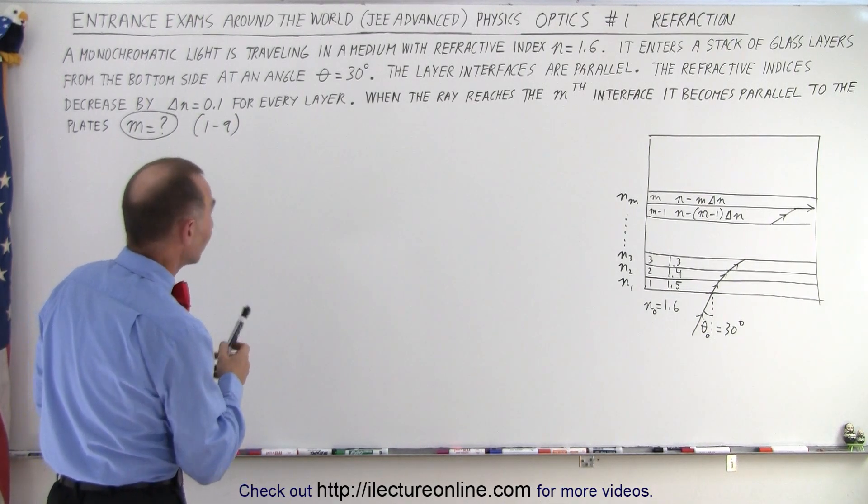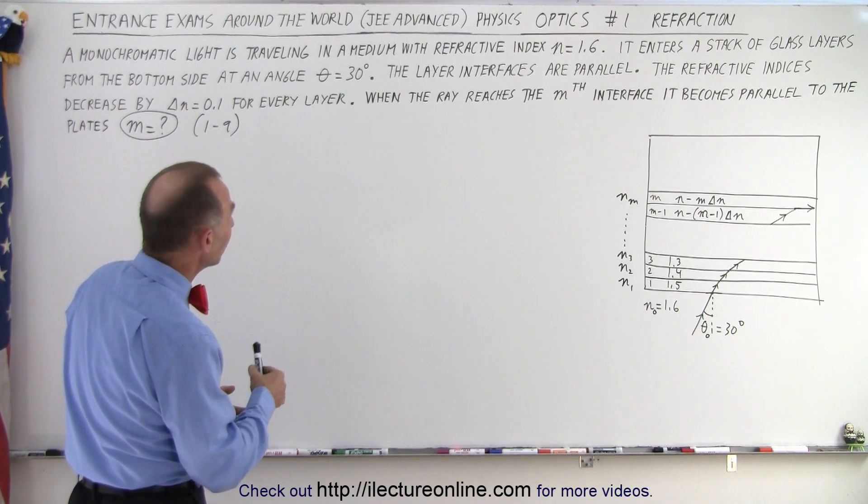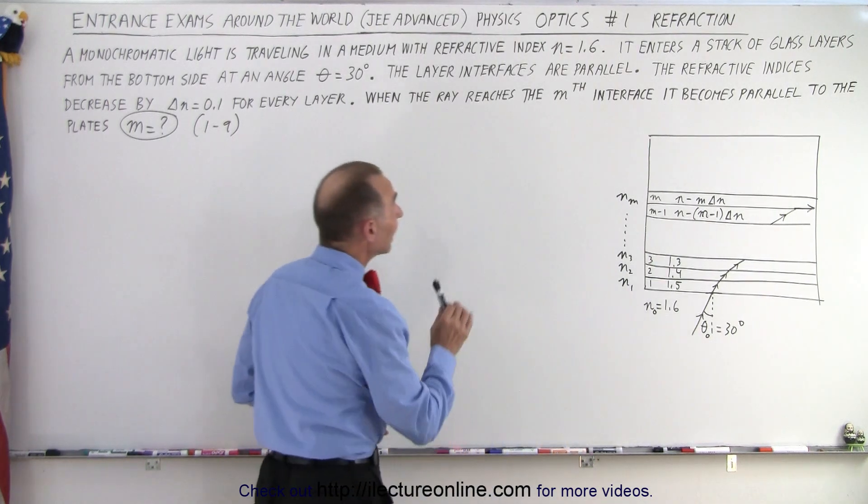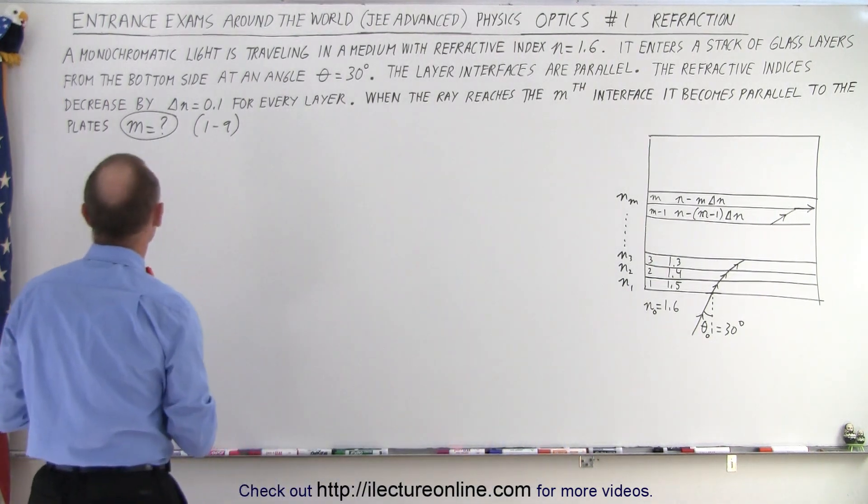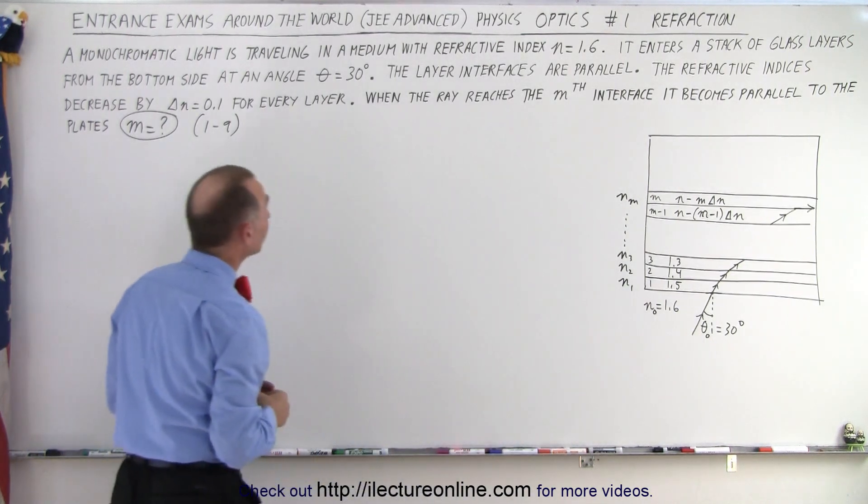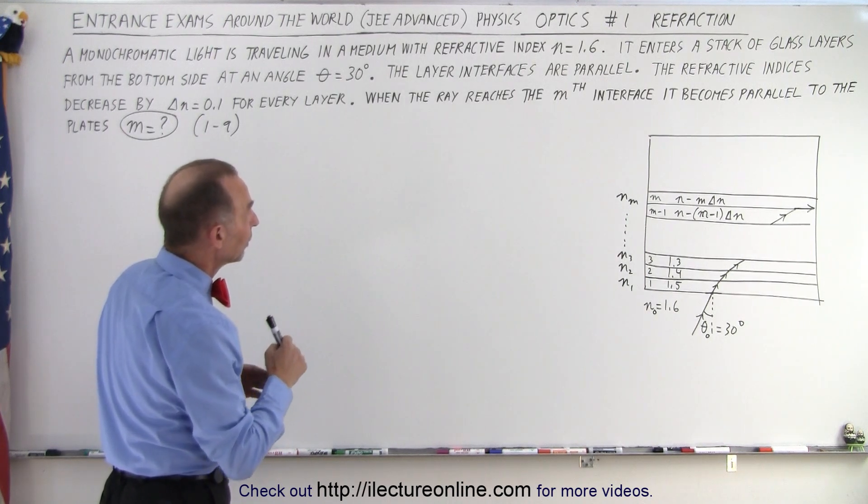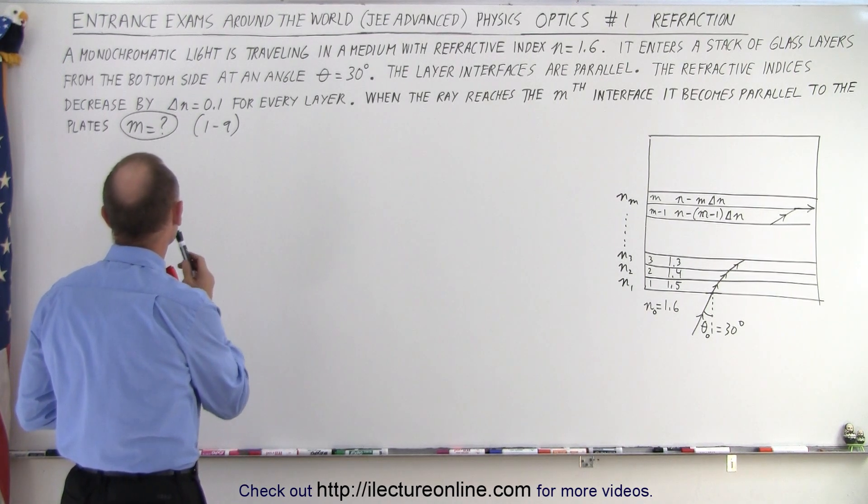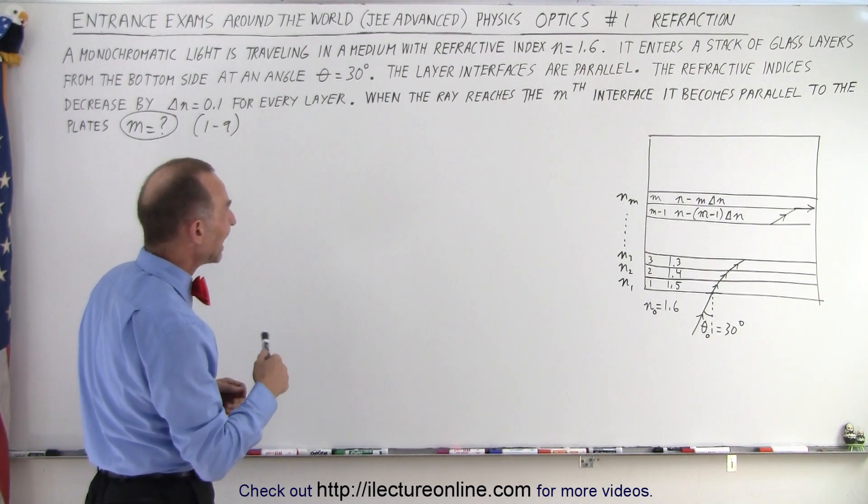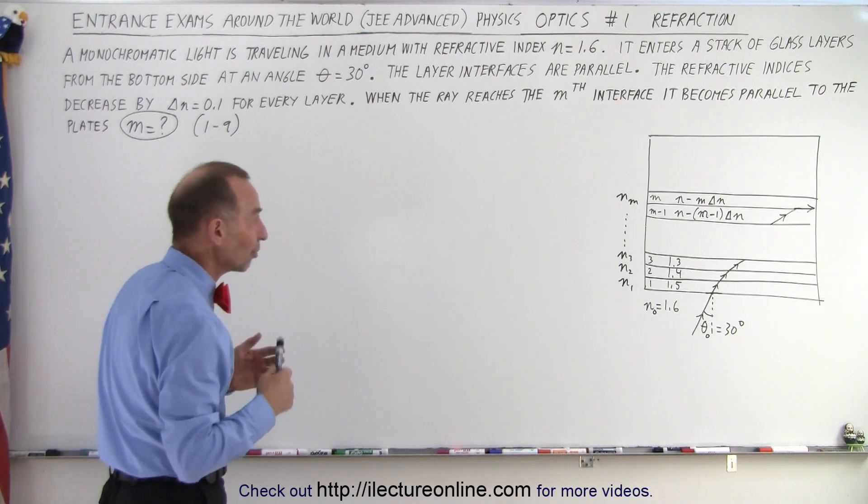A monochromatic light, meaning of the same wavelength, is traveling in a medium with refractive index n equals 1.6. It enters a stack of glass layers from the bottom side at an angle of 30 degrees. So that's the initial angle of entry right there. The layer interfaces are all parallel. The refractive index decreases by delta n equals 0.1 for every layer. When the ray reaches the mth interface, it becomes parallel to the plates. M equals question mark.